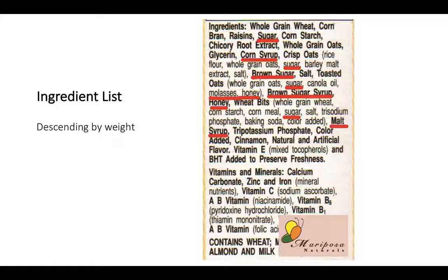A way that food companies get around this is by using multiple types of sugar so that none appears as the very first ingredient. Whether that sugar is coming from honey, agave nectar, corn syrup, or plain cane sugar, it's all considered added sugar and is processed the same way in the body. There's a whole list of added sugar synonyms you might find on a food label. If you're using the old label, check the ingredient list to ensure most sugars come from natural sources.